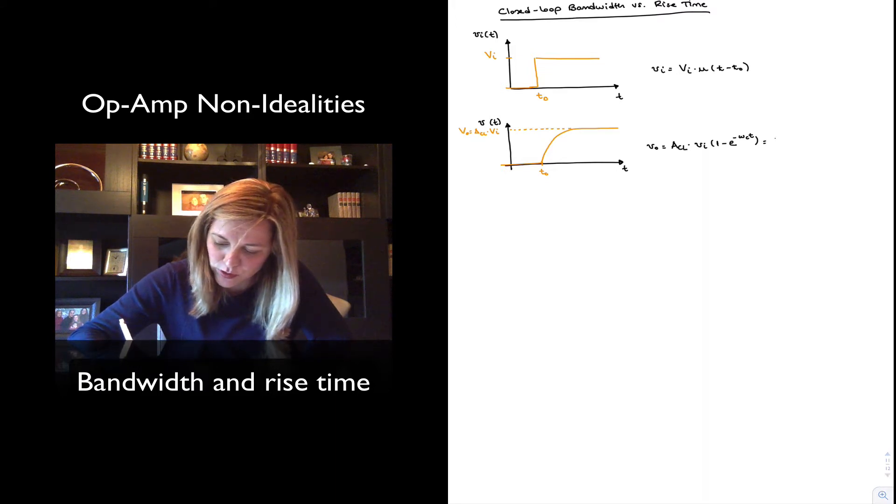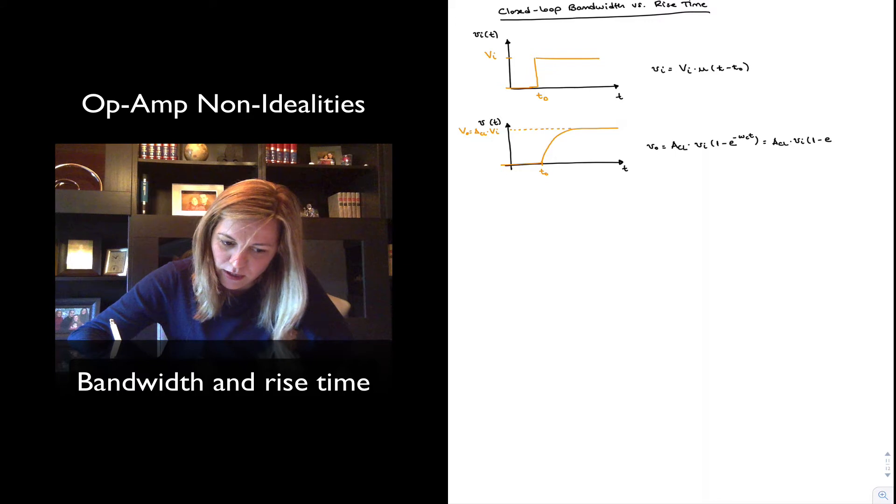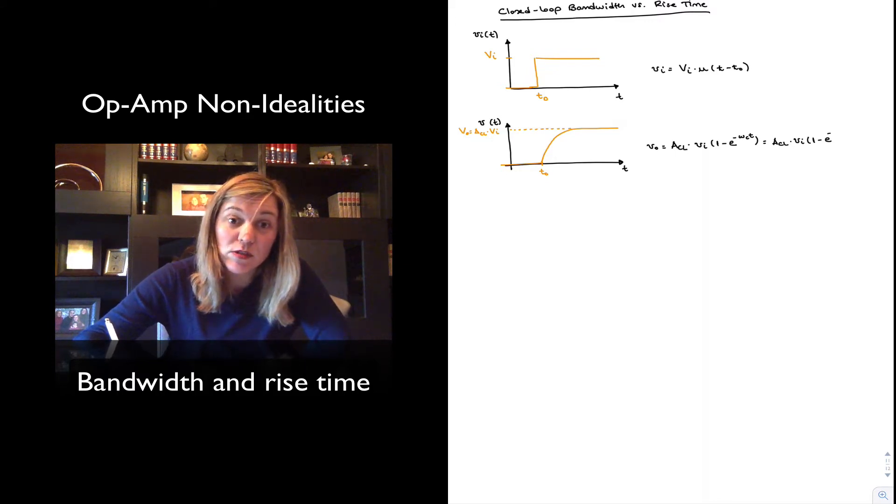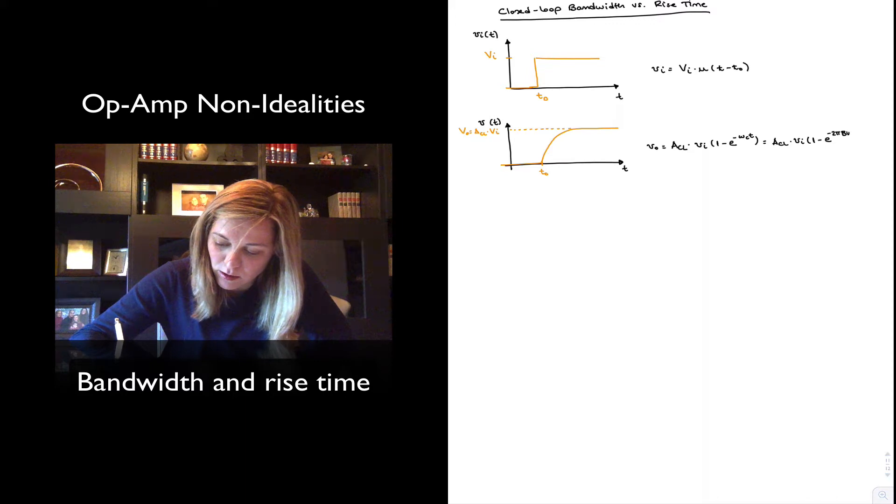And so I can also express this as ACL times Vi, one minus e to the negative. And the closed loop bandwidth is omega c, or we can also express it in terms of the bandwidth in hertz, which will be 2 pi closed loop bandwidth times t.